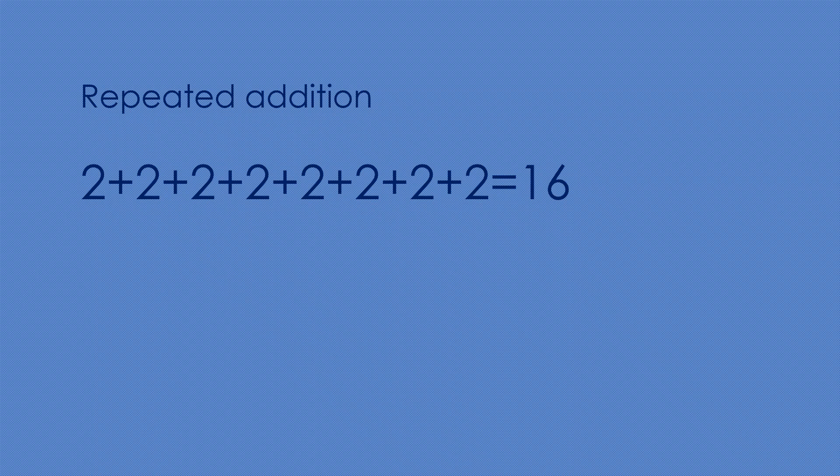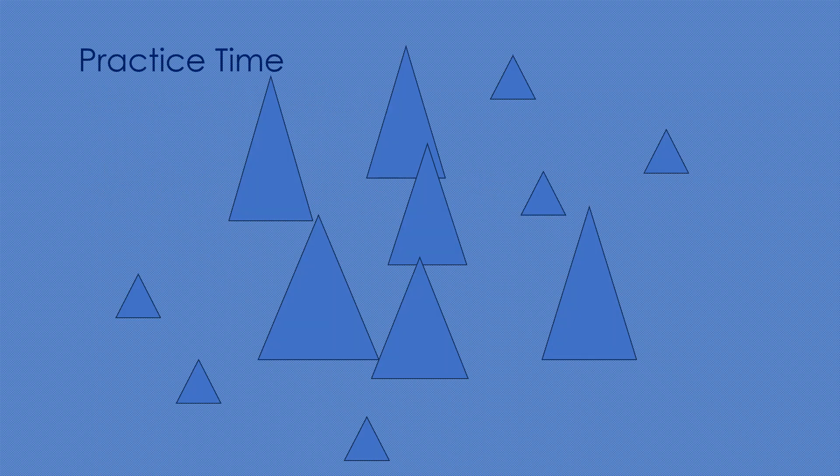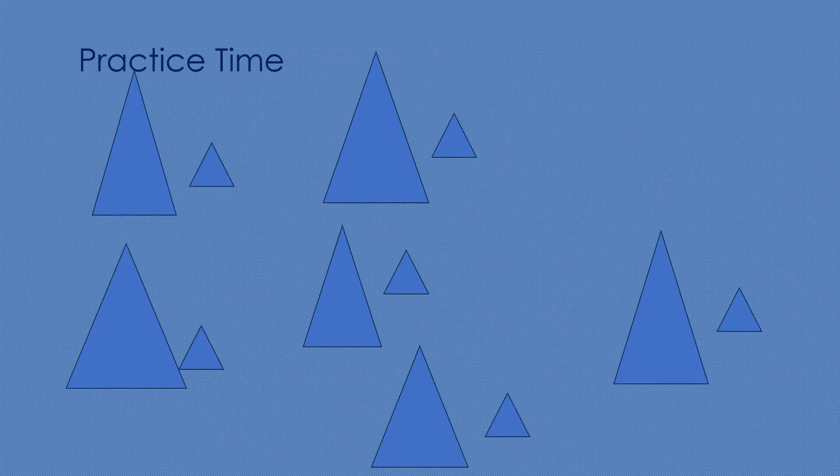Let's do some more practice. Have a go at counting how many triangles there are in twos. It's more efficient than counting in ones. Let's count together. There are 2, 4, 6, 8, 10, 12. There are 12 triangles all together.